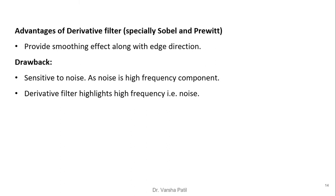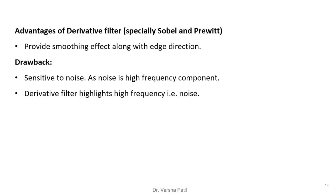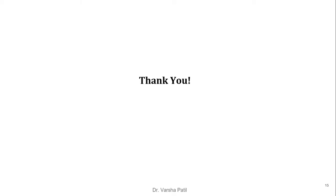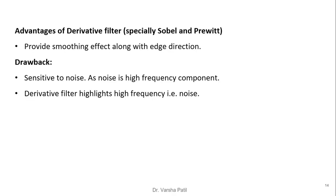The advantage of derivative filters, especially Sobel and Prewitt, is that they provide a smoothing effect along with edge enhancement. The drawback is that derivative operators are sensitive to noise, since noise is a high frequency component — enhancing edges will also enhance noise. Therefore, it is important to smooth the image before edge detection to avoid corrupting the entire image.